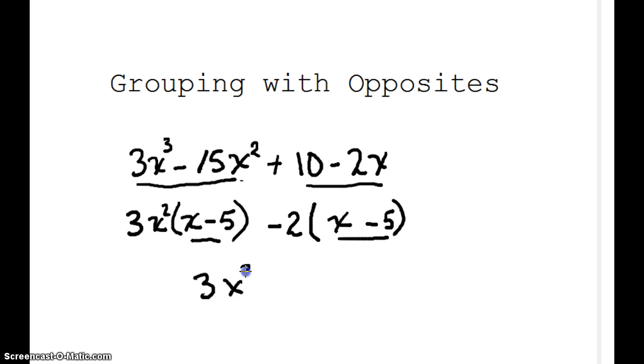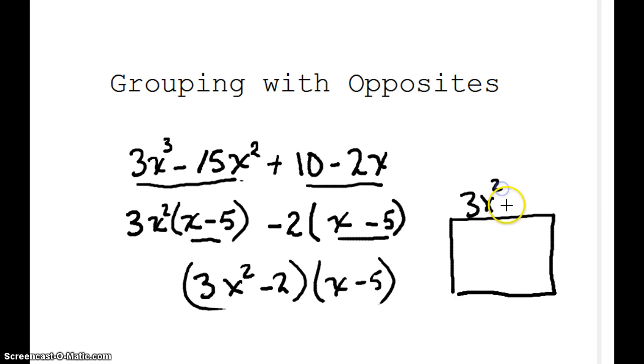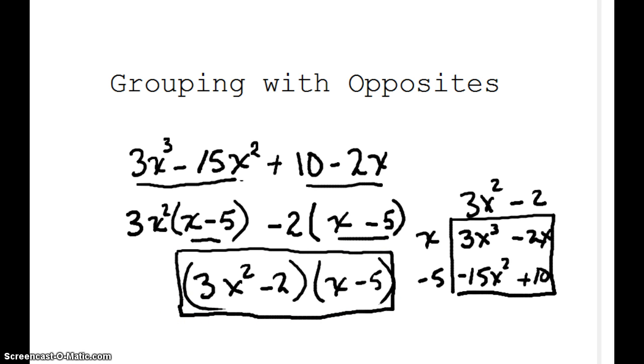And so then it's just a simple 3X squared minus 2 times X minus 5. And remember, the easiest way to check to see if you factored correctly. Box method, 3X squared minus 2, X minus 5. Multiply everything through, 3X cubed minus 2X minus 15X squared plus 10. Does everything look the same? So your final step, if you truly want to make sure you've got the right answer, is to multiply it back out. And you should always get the same answer.